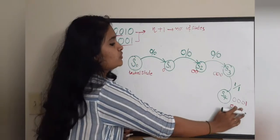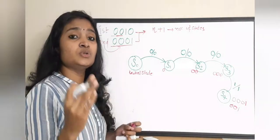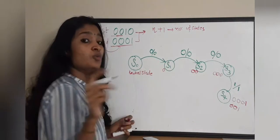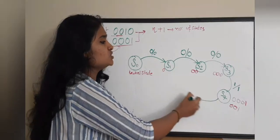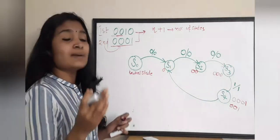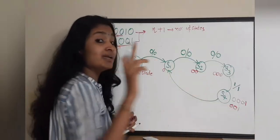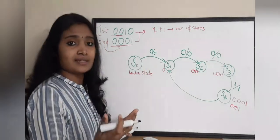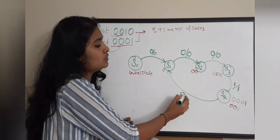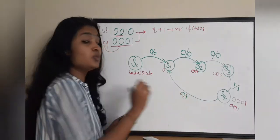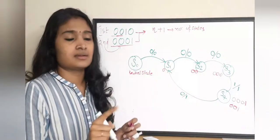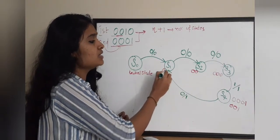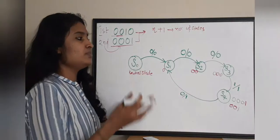From S4, if we receive a 0, which state should we jump to? S1 holds one 0, which is what we need. So from S4 to S1, with input 0, the output is 1 because the first sequence 0 0 1 0 is now detected. At S4 the second sequence was detected giving output 1, and at S1 the first sequence is detected giving output 1.